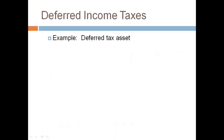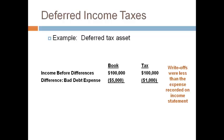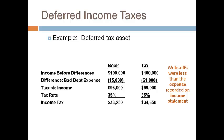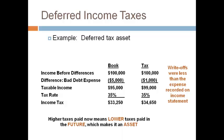Let's look at an example of a deferred tax asset. Income before differences will always be the same for book and tax. The book-tax difference is bad debt expense. In the current year, bad debt expense for tax is lower than bad debt expense for books. This creates a higher taxable income for tax and tax payable is higher than tax expense in the current year. What happens in the future will always be the opposite — a higher tax payable in the current year results in a lower tax payable in future years. Paying less in the future is an asset.